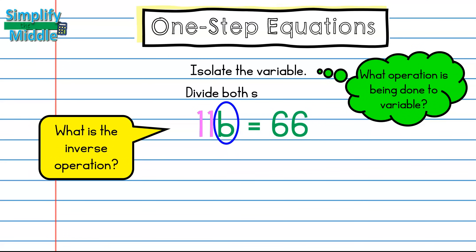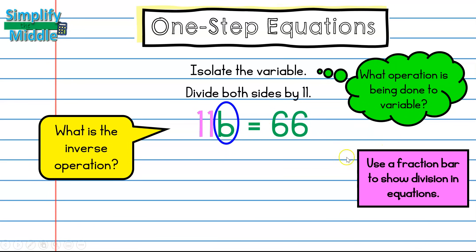Division. So I'm going to divide both sides by 11. I always want to use a fraction bar to show division with equations instead of using the normal division symbol. So I'm just going to draw a fraction bar under each of these terms, and I'm going to write 11 underneath to show that they're being divided by 11. So I will have b equals 6.